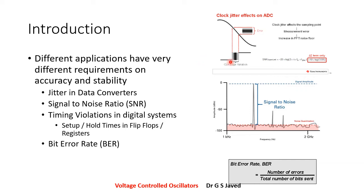The metric used to understand this is bit error rate (BER). Bit error rate is defined as the number of errors in the data transmission signal divided by the total number of bits being sent. Mathematically, if there is one error for every 10^10 bits sent, that is called a bit error of 1 in 10^10, written as BER = 1 × 10^-10.